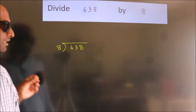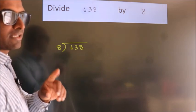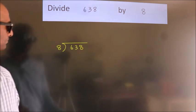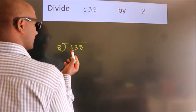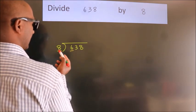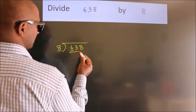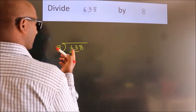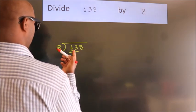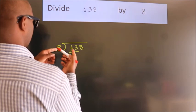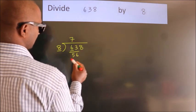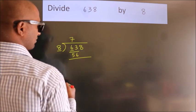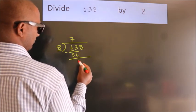This is your step 1. Now, next, here we have 6, here 8. 6 is smaller than 8. So we should take two numbers, 63. A number close to 63 in the 8 table is 8 times 7 equals 56. Now we subtract and we get 7.